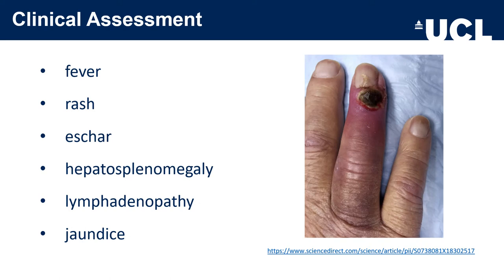For the clinical assessment of a patient presenting with fever in a returning traveller, you're going to look for fever, rash and eschar — which is an ulcer with a black necrotic core — hepatosplenomegaly, lymphadenopathy and jaundice. These are the most common features seen in those who have a fever.